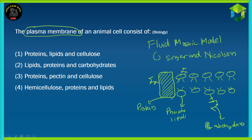Looking at the options, option 1 says proteins, lipids and cellulose — cellulose is not correct. Cellulose is only found in the cell wall of plants and is not part of the plasma membrane of an animal cell, so option 1 is incorrect. Option 2 is the correct option: lipids, proteins and carbohydrates. Option 2 is what the plasma membrane of an animal cell consists of.